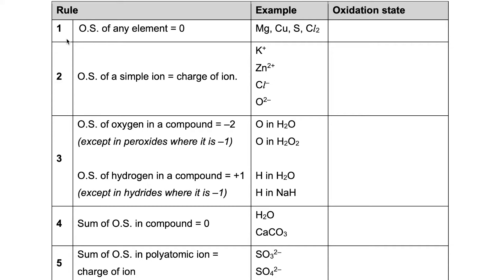There are five rules that we can use to calculate oxidation state. The first rule states that the oxidation state of any element is equal to zero. Some examples are shown over here: magnesium, copper, sulfur, and chlorine. As long as there are elements, the oxidation state will be zero.